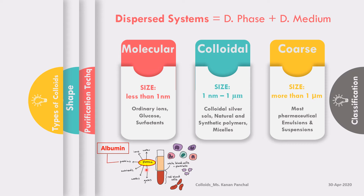Plasma is the major component in which other components are suspended, so plasma becomes the dispersion medium. RBCs are six by two micrometers in dimension, hence they make up the coarse dispersion in plasma. Other constituents like certain proteins, ions, and nutrients are present in molecular form. A specific protein called albumin is greater than one nanometer, placing it in the colloidal size range — hence albumin makes up the colloidal dispersion in plasma, and blood is considered a complex dispersion.